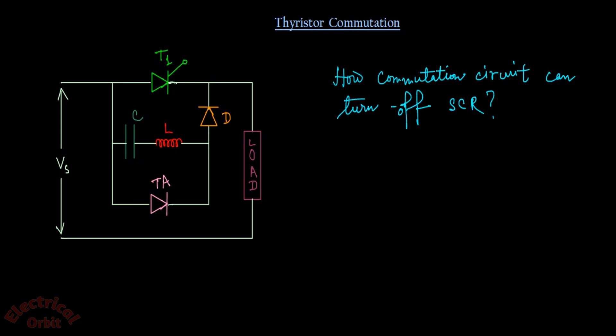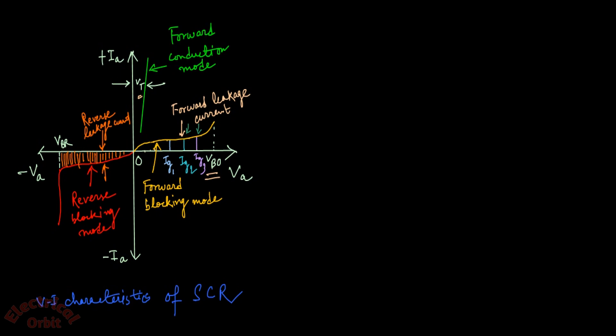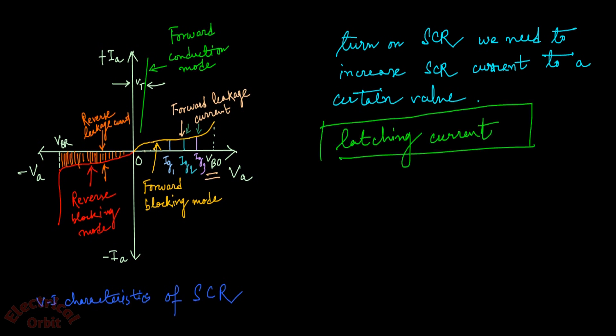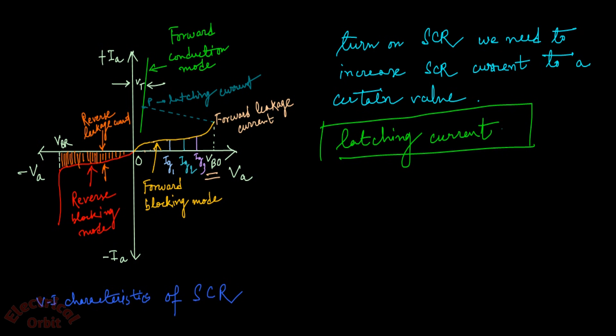Now your question will be: how can a commutation circuit turn off an SCR? For that we need to understand the VI characteristics curve discussed in the previous lecture. There I discussed about the conduction mode and the forward blocking mode. To turn on an SCR we need to increase the SCR current to a certain value, and that is called latching current. In the characteristics curve, this is at point P — that is the point for latching current. After this latching current, the thyristor will be turned on.